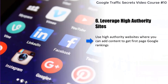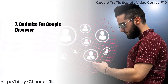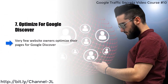Six: leverage high authority sites. Use high authority websites where you can add content to get first page Google rankings. The most powerful of these is YouTube. Most of the time there will be videos presented on the first page of the search results, and they almost always come from YouTube. Make sure that you fully optimize your YouTube videos for SEO. Facebook is another high authority website which you can use to achieve first page Google rankings. Google doesn't index Facebook posts but it does index Facebook pages. Another good high authority website where you can add content and a link back to your website is Medium.com.